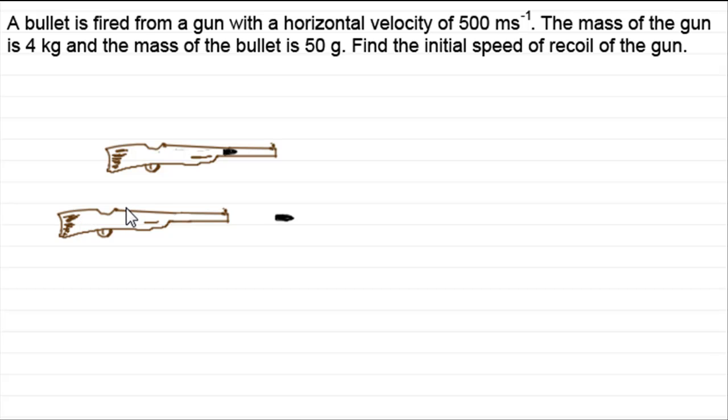To do a problem like this, I'm not going to draw the rifle and the bullet. I'm going to treat them as particles. I would represent the gun and the bullet as particles, and I'd write the mass of the gun, 4 kilograms, inside here, and the mass of the bullet. Remember it's 50 grams and we've got to convert it to kilograms. There's 1000 grams make a kilogram, so that's going to be 0.05 kilograms.